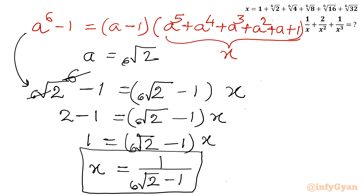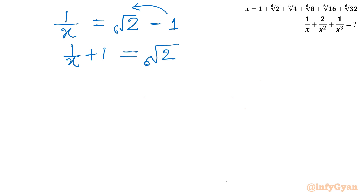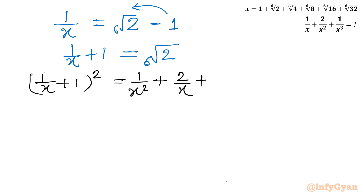Now we have to evaluate the required expression. Let us take the reciprocal of x: 1 over x equals 6th root of 2 minus 1. Taking the minus 1 to the left gives us 1 over x plus 1 equals 6th root of 2. Now I will consider squaring this: 1 over x plus 1 whole squared expands to 1 over x squared plus 2 over x plus 1, and the right-hand side is 6th root of 2 whole squared.